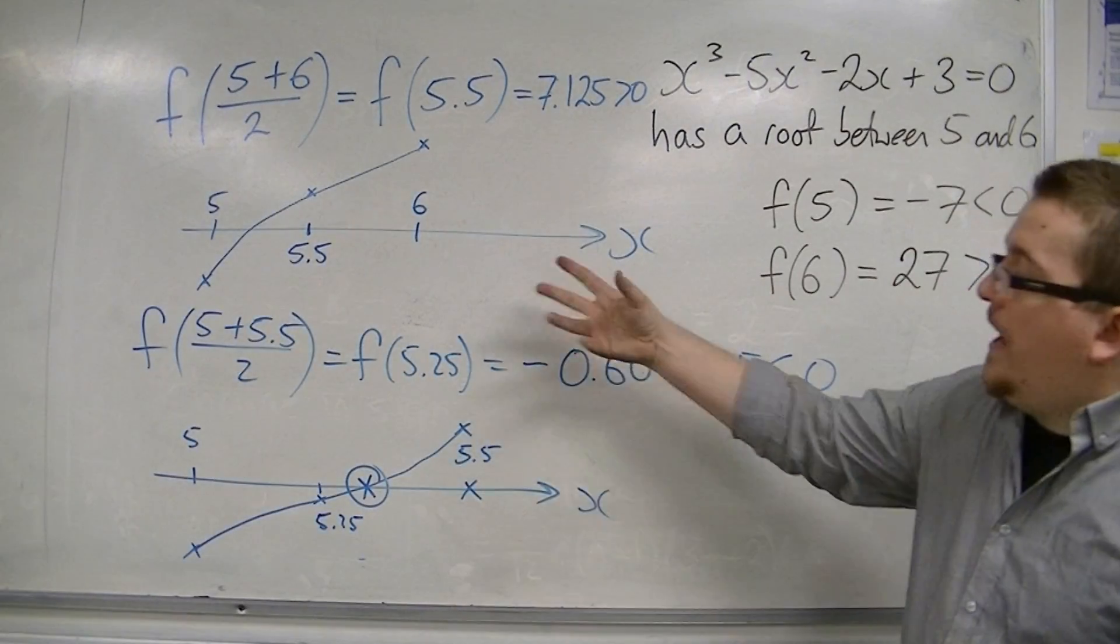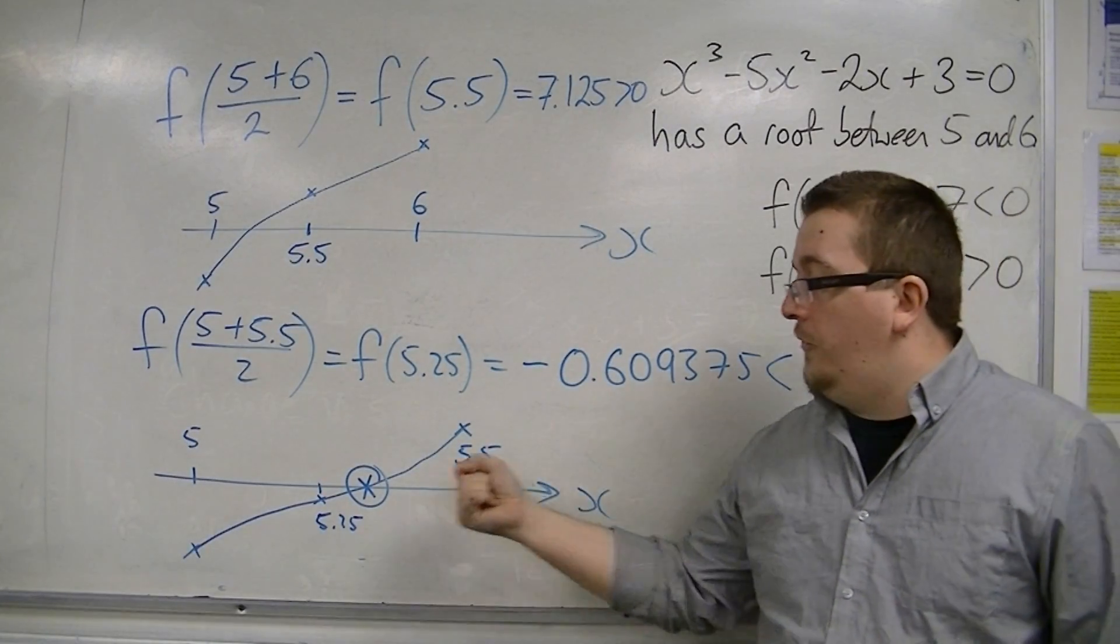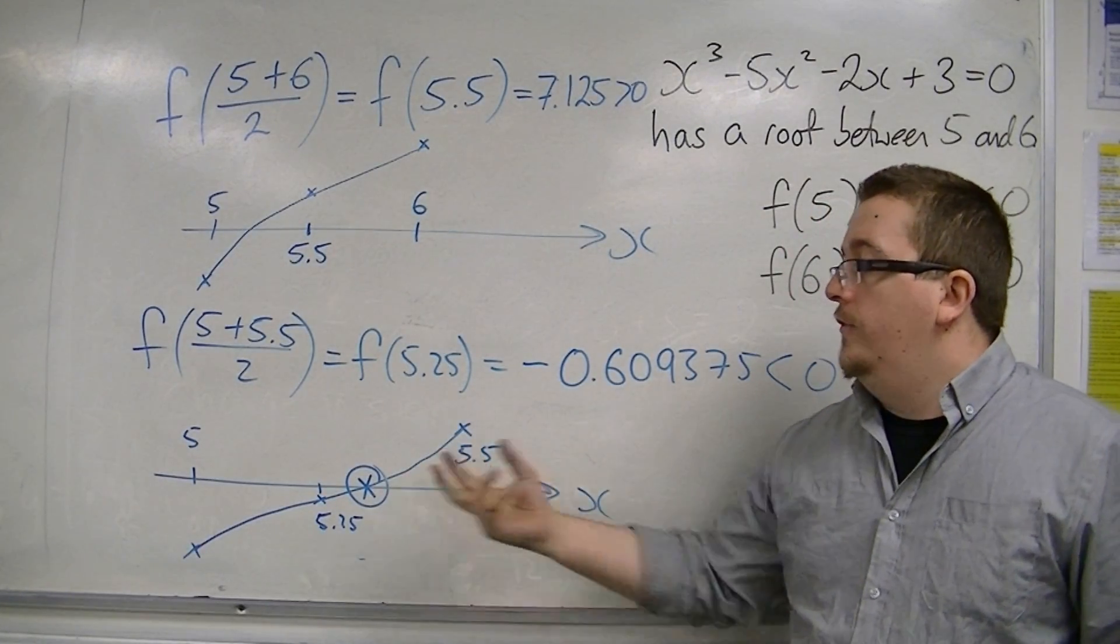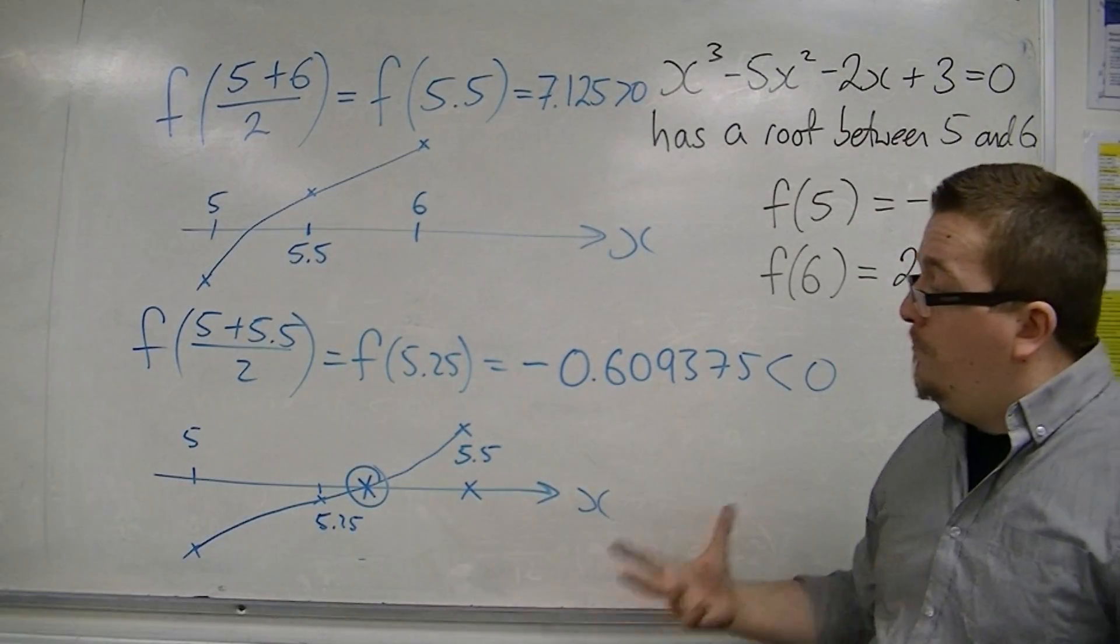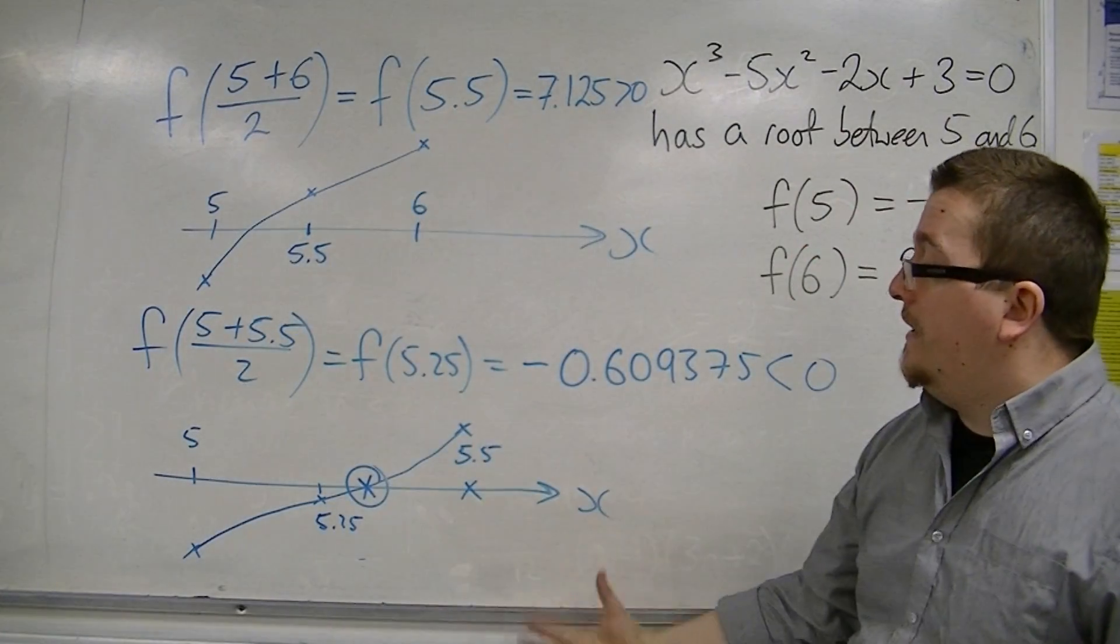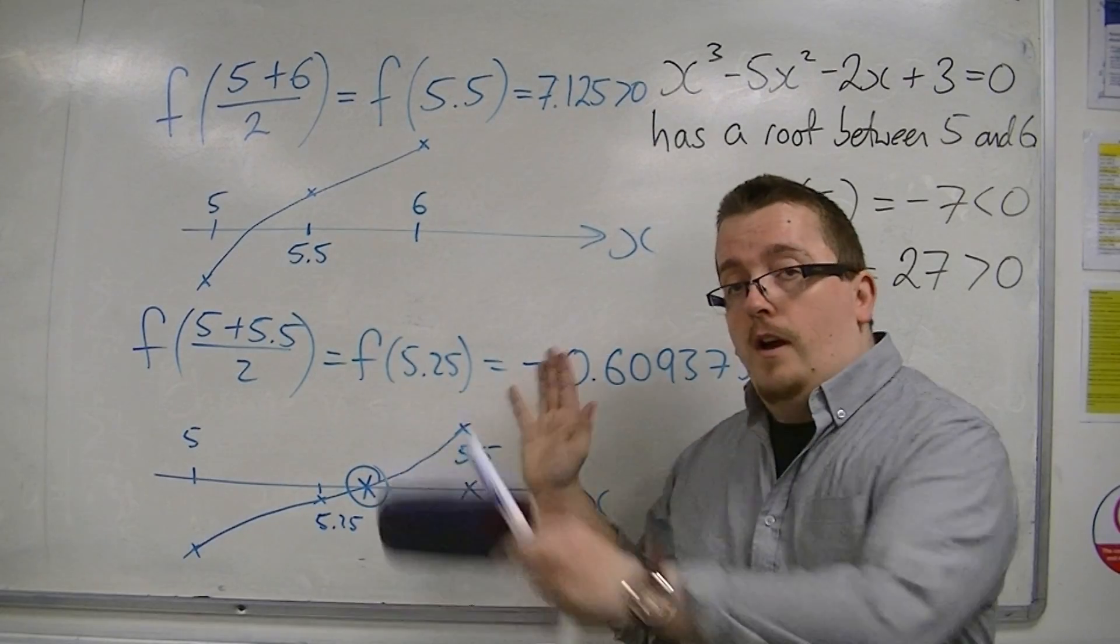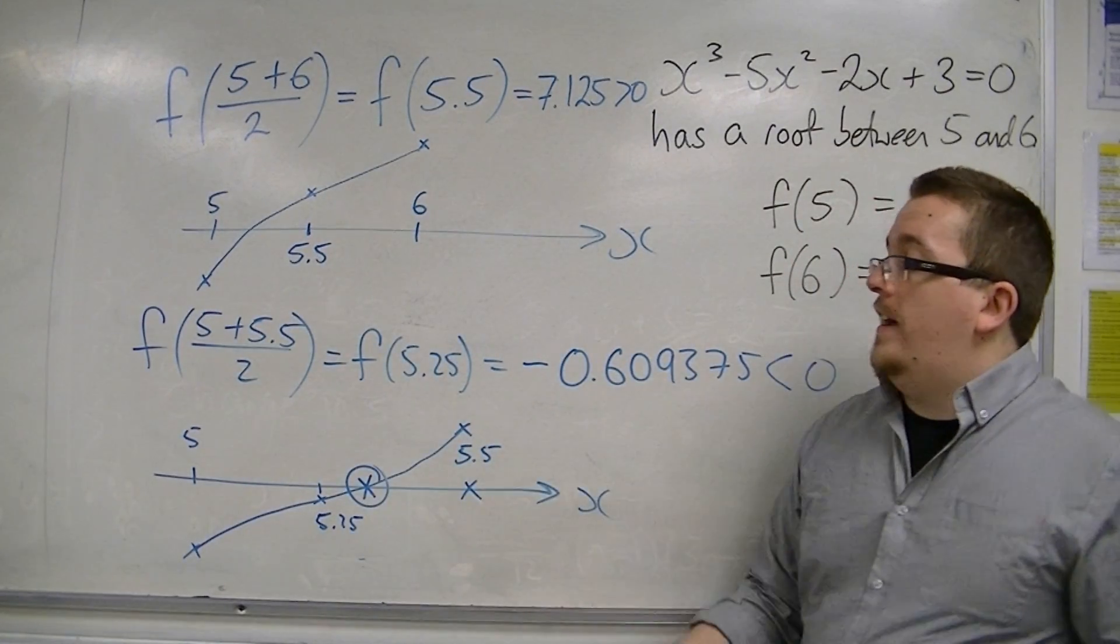So each step, I am homing in closer and closer to the actual real root. And I can keep on doing this method, bisecting and halving the region and homing in on that root.